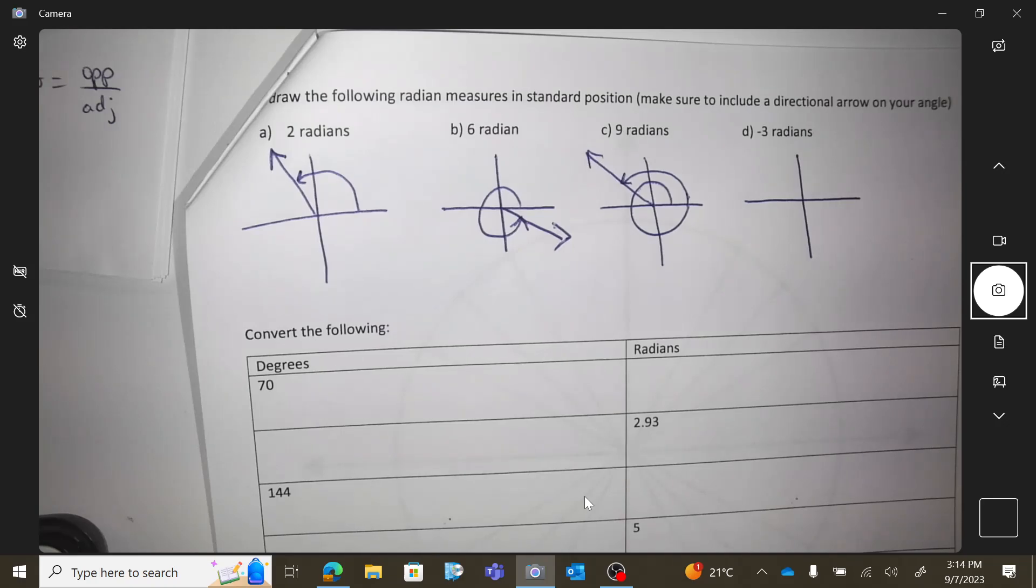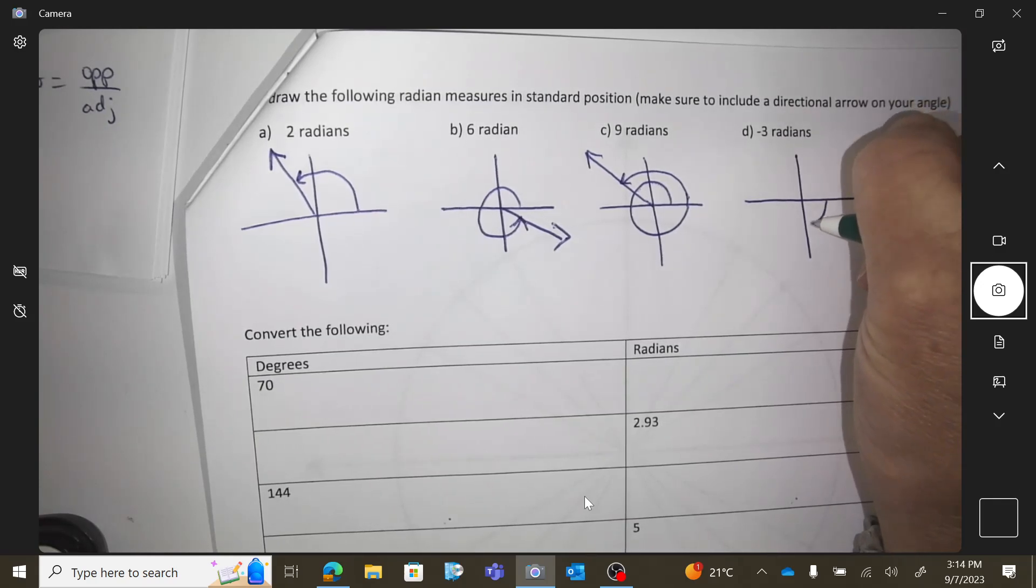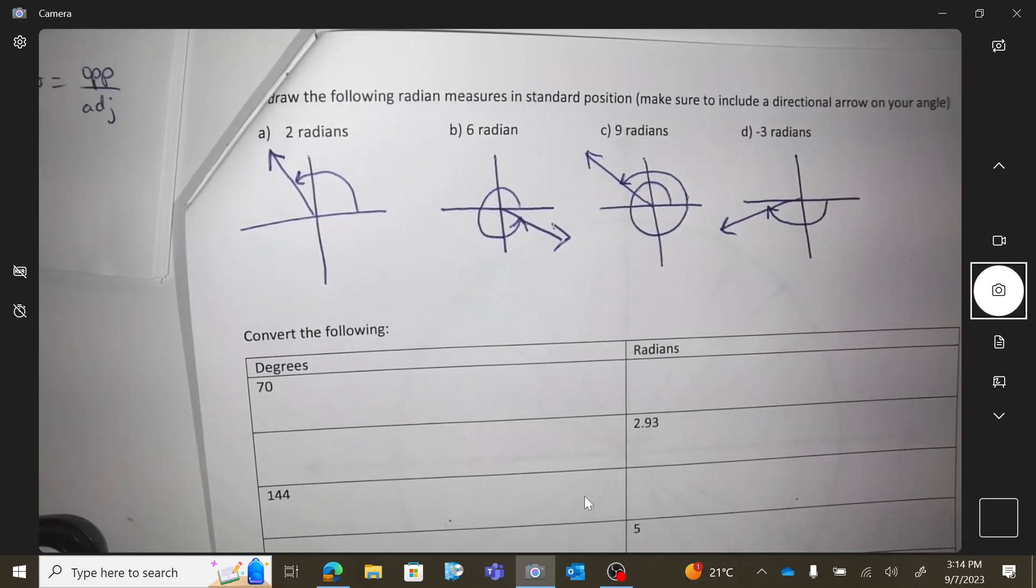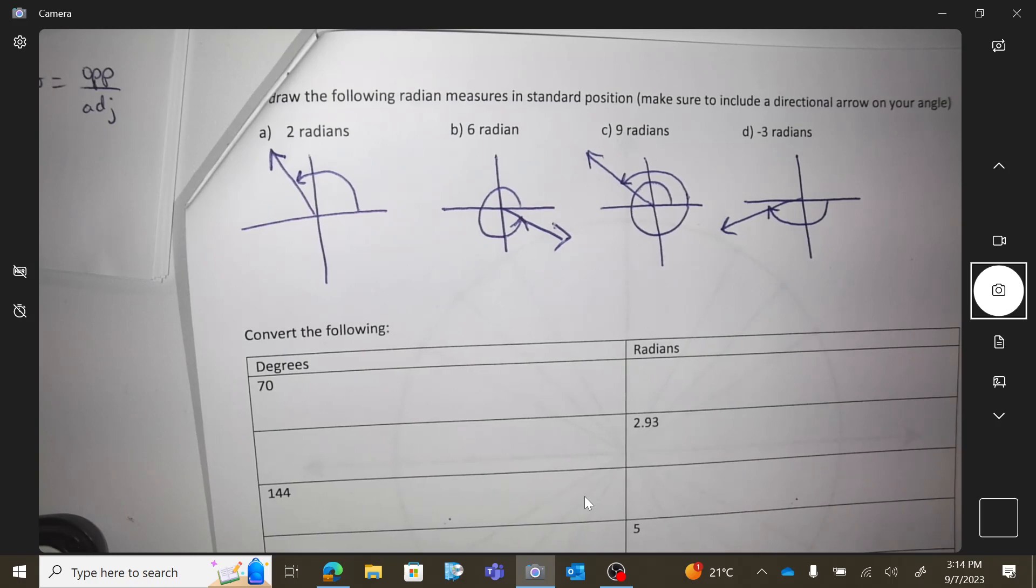Okay, and negative 3 radians. What does a negative traveling do? We just go downward, right? And then I'm going to do this. 3.14 is a semicircle, 180, right? So I better not go more than that. I'm going less than 180 backwards.